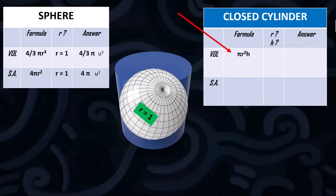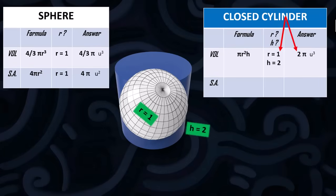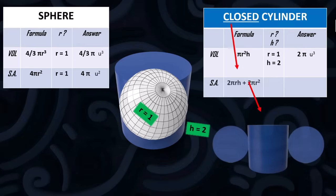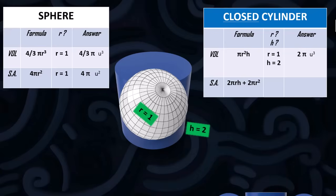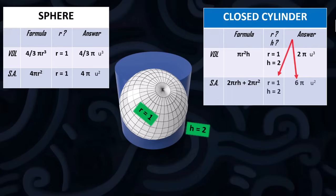The volume of a cylinder is pi r squared h. If r equals 1 and h equals 2, that's 2 pi. For the surface area it's 2 pi r squared to account for the top and the bottom of this closed cylinder, and if r equals 1 then that's 6 pi.